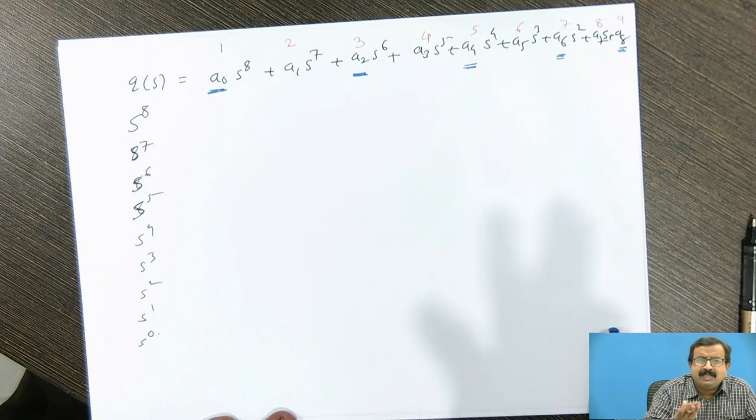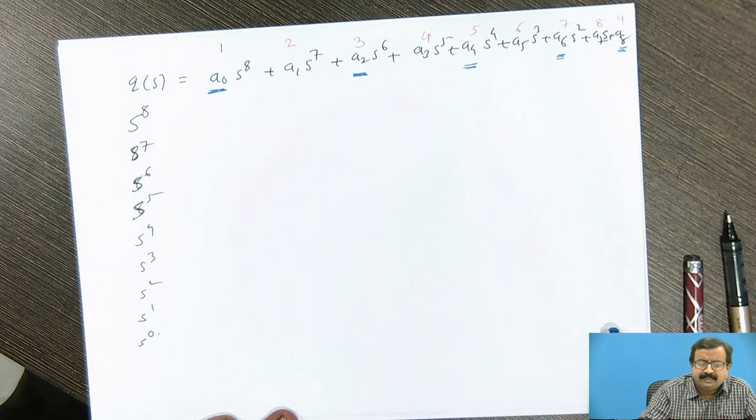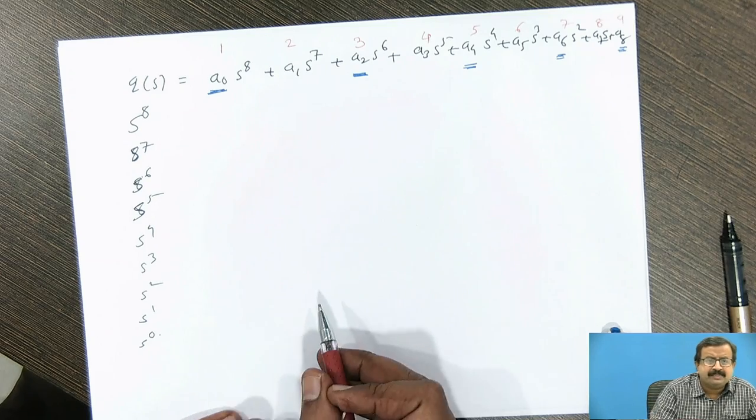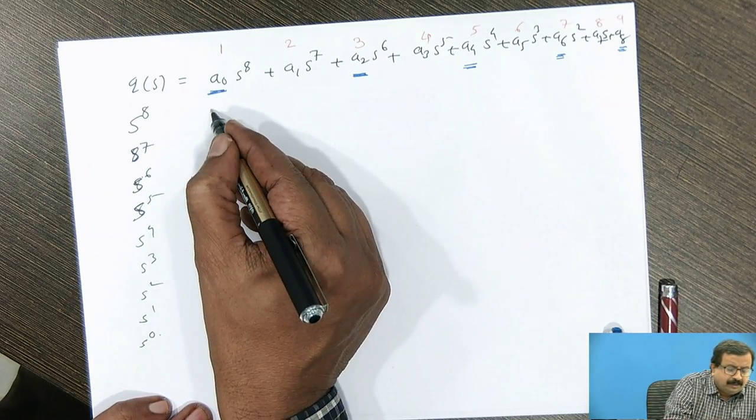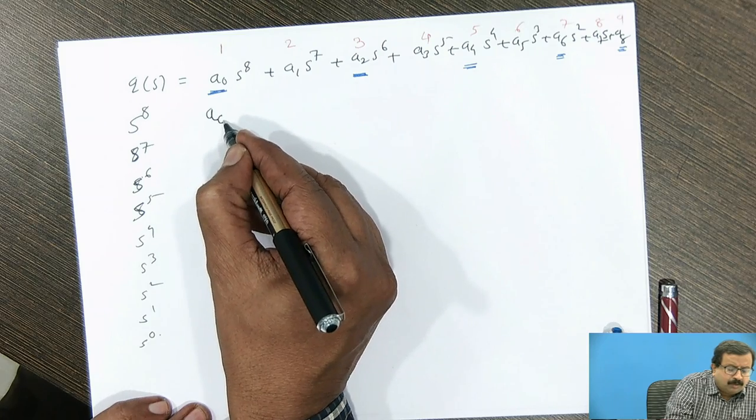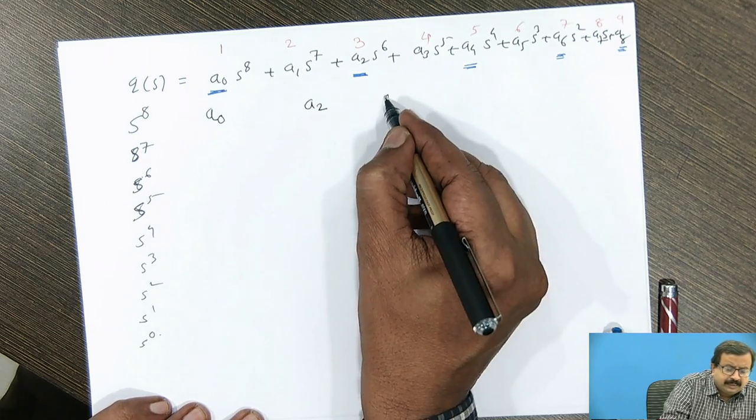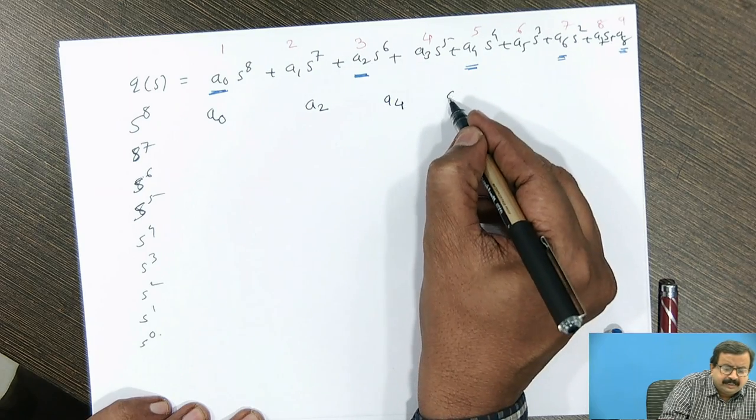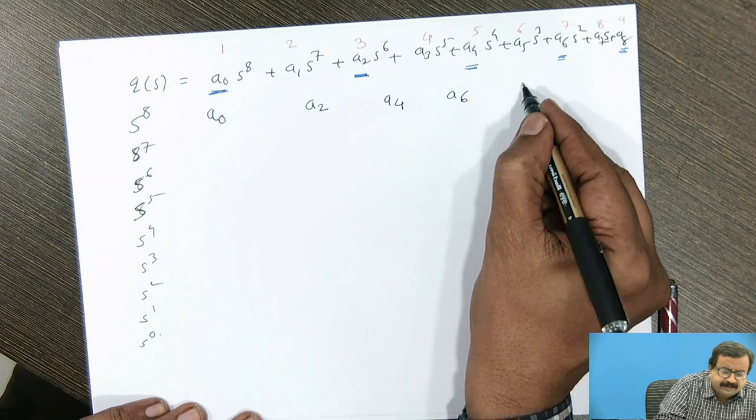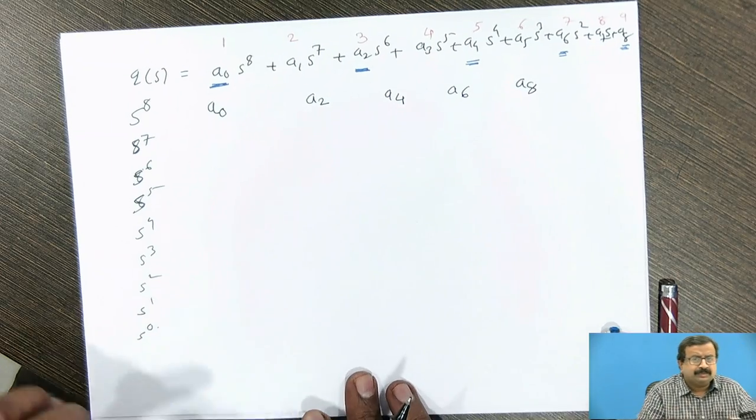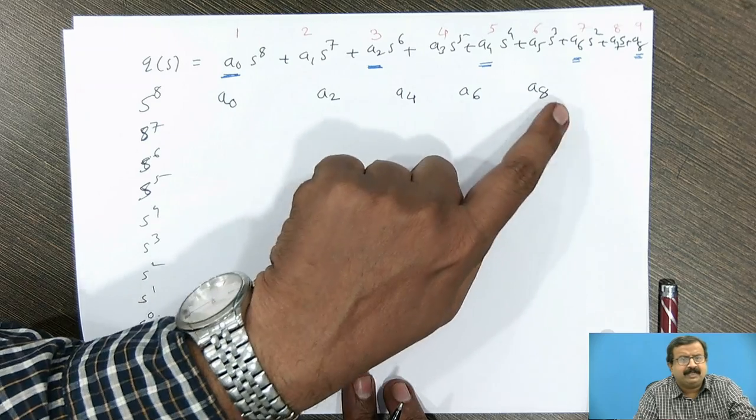So out of this 9 terms, how many odd terms I have got? 1, 3, 5, 7 and 9. So what I will do as a first case, I will write here, in the first line, all the odd number coefficients: a0, then a2, then a4, then a6, and a8. So this is my 1st term, 3rd term coefficient, 5th, 7th and 9th.